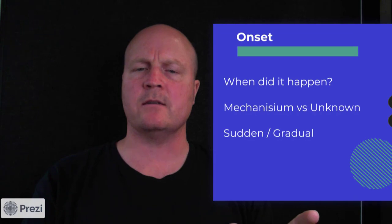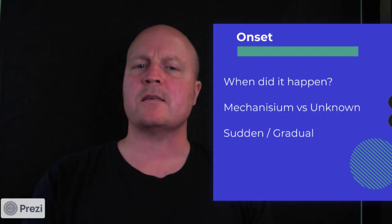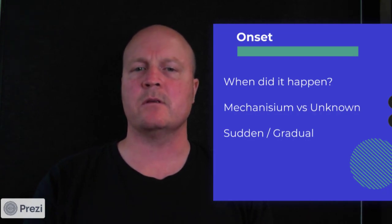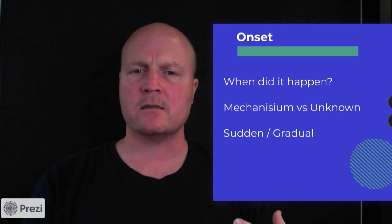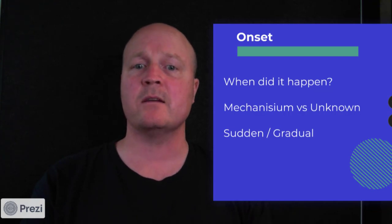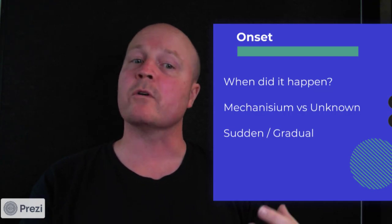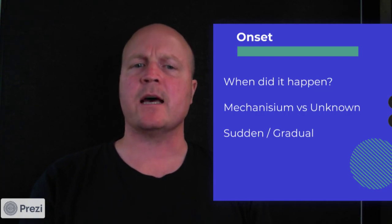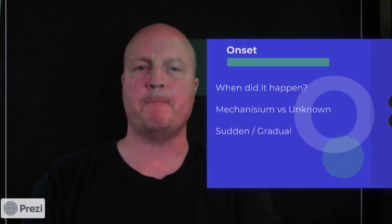Let's start with O. O stands for onset — so when did this happen and what were you doing when it happened? This gets us into finding what the mechanism of injury was, or if there was no mechanism of injury, we find out if it was a sudden onset of pain or if it gradually built up.